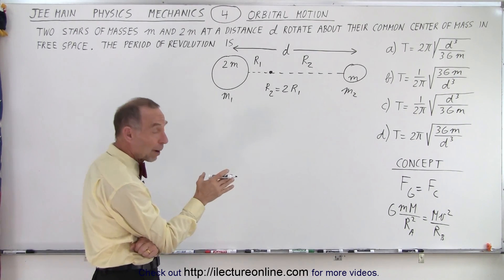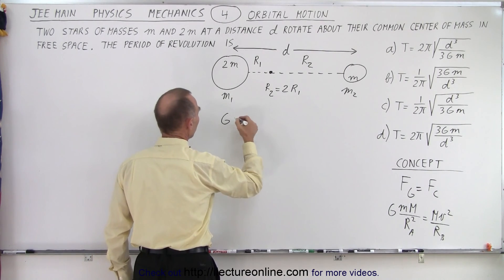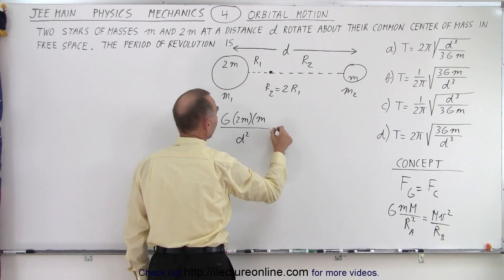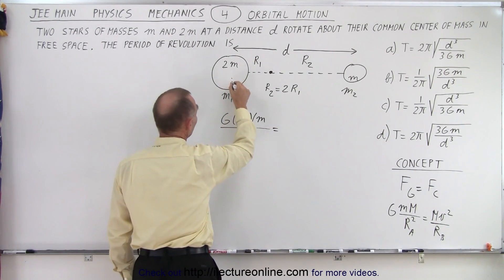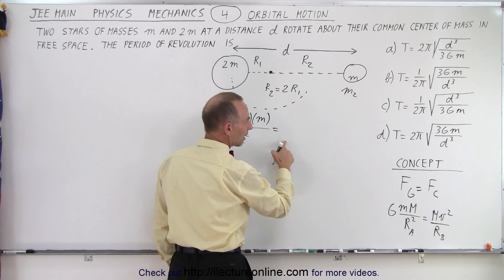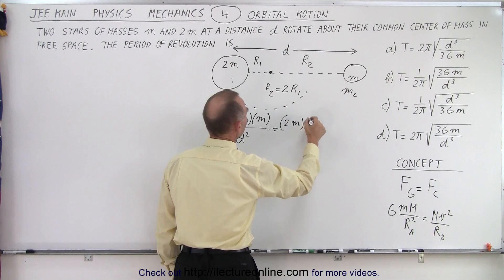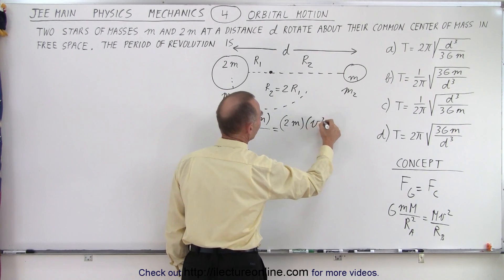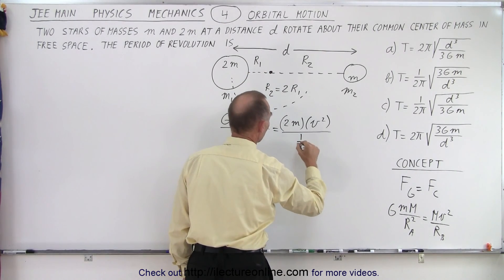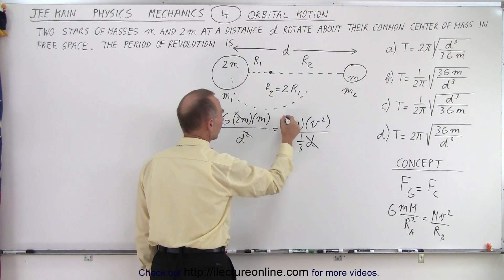So knowing that, let's come up with an equation. We have G times the product of the two masses — 2m times m — divided by the distance squared, which is d². That equals the centripetal force for the big object: 2m times v² divided by r1, which is one-third d. Notice we have a d² and a d, and 2m on both sides, which makes things a little easier.